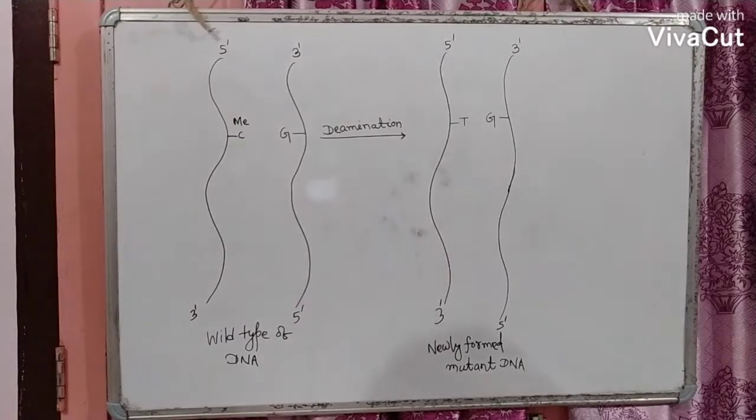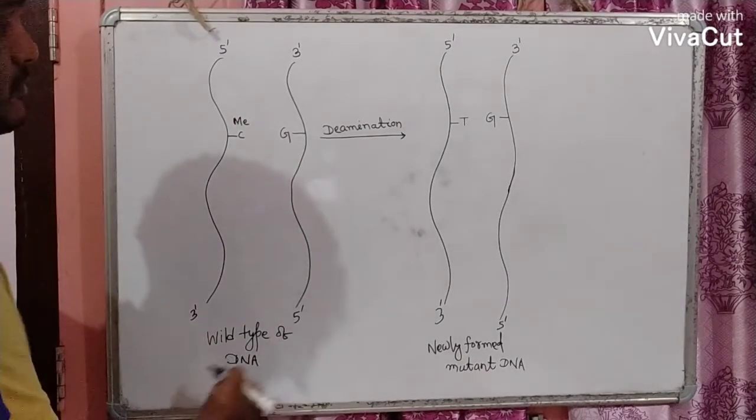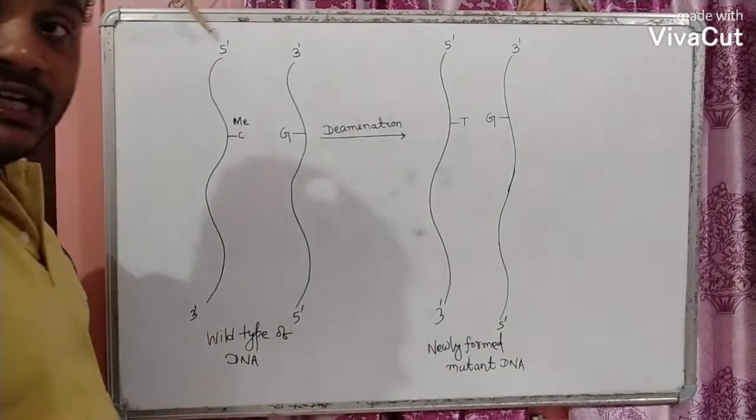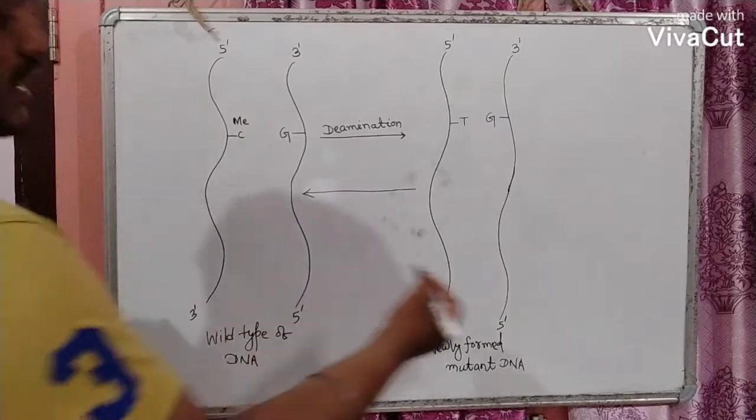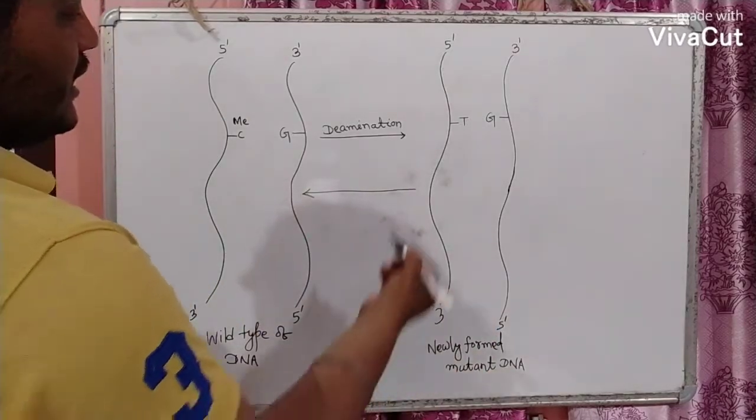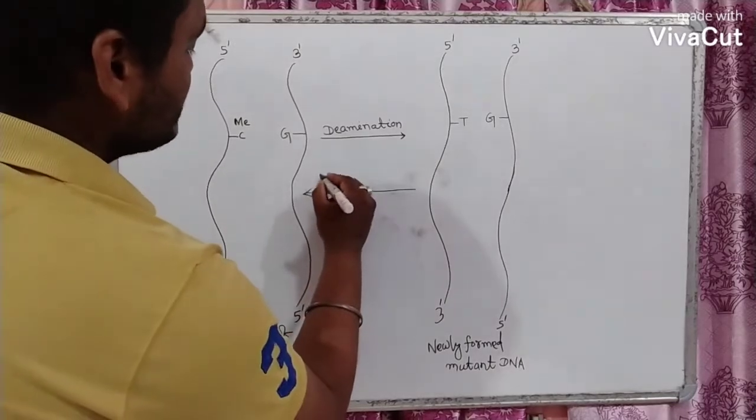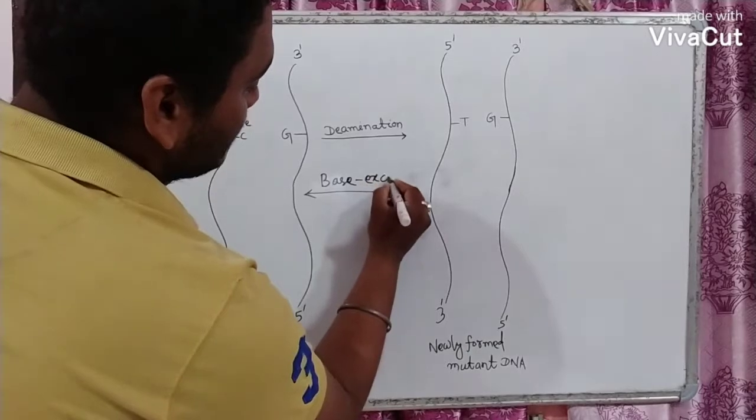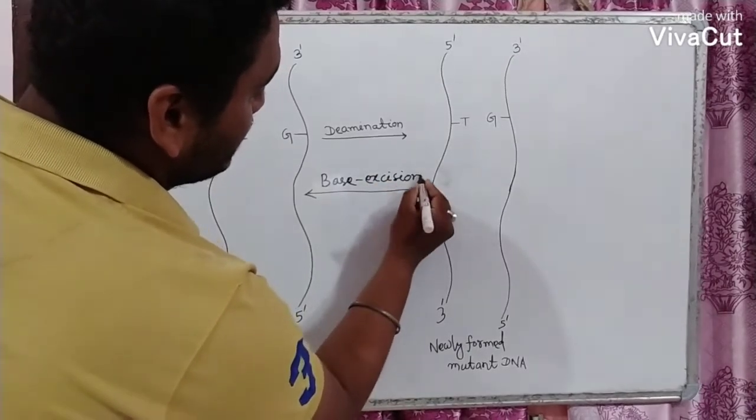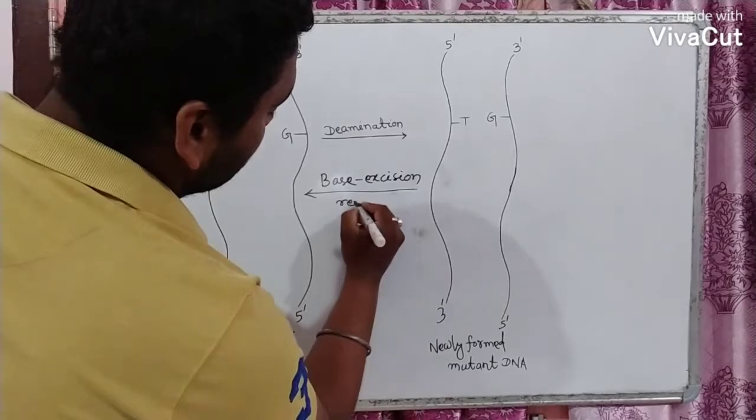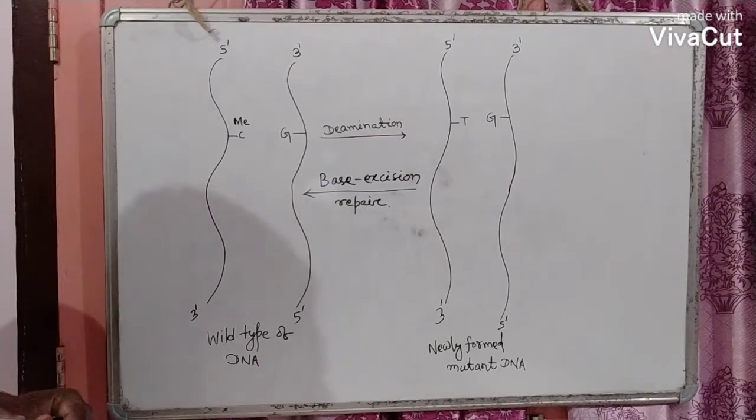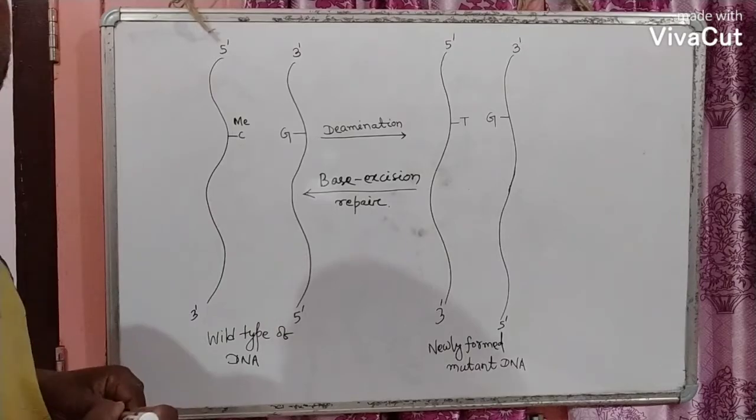As we have discussed previously, the wild type of DNA undergoes de-amination to produce newly formed mutant DNA. If, in any case, the newly formed mutant DNA undergoes base excision repair, then it will form again the wild type of DNA and there will be no chance of forming any mutant DNA.